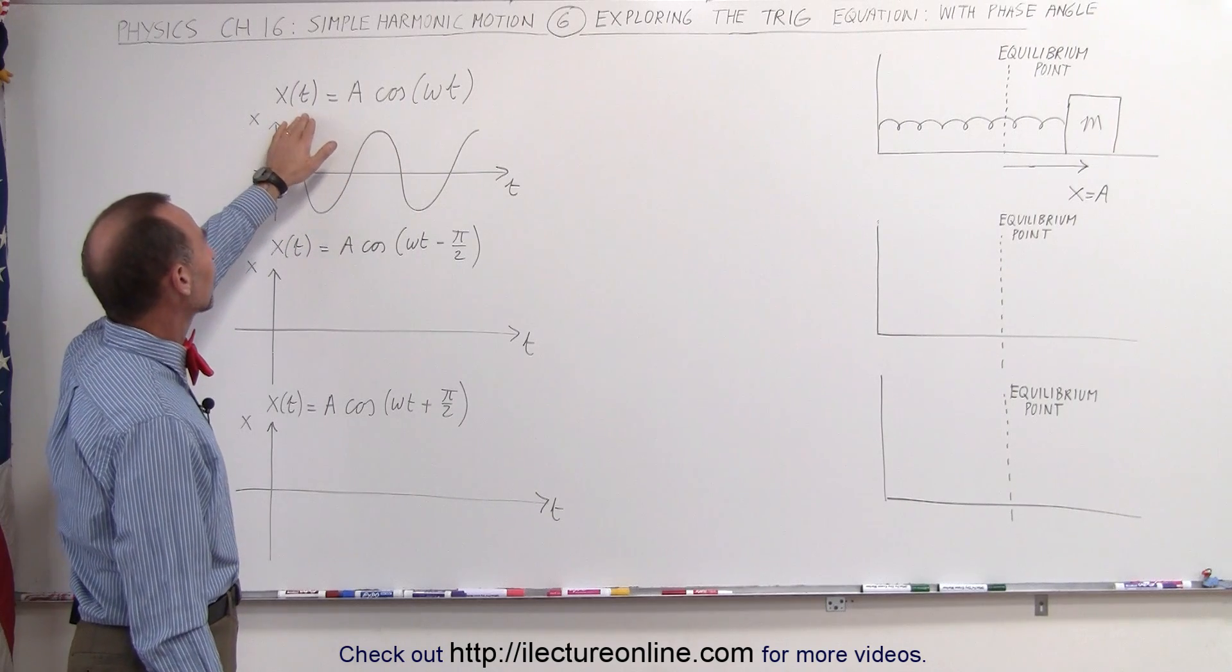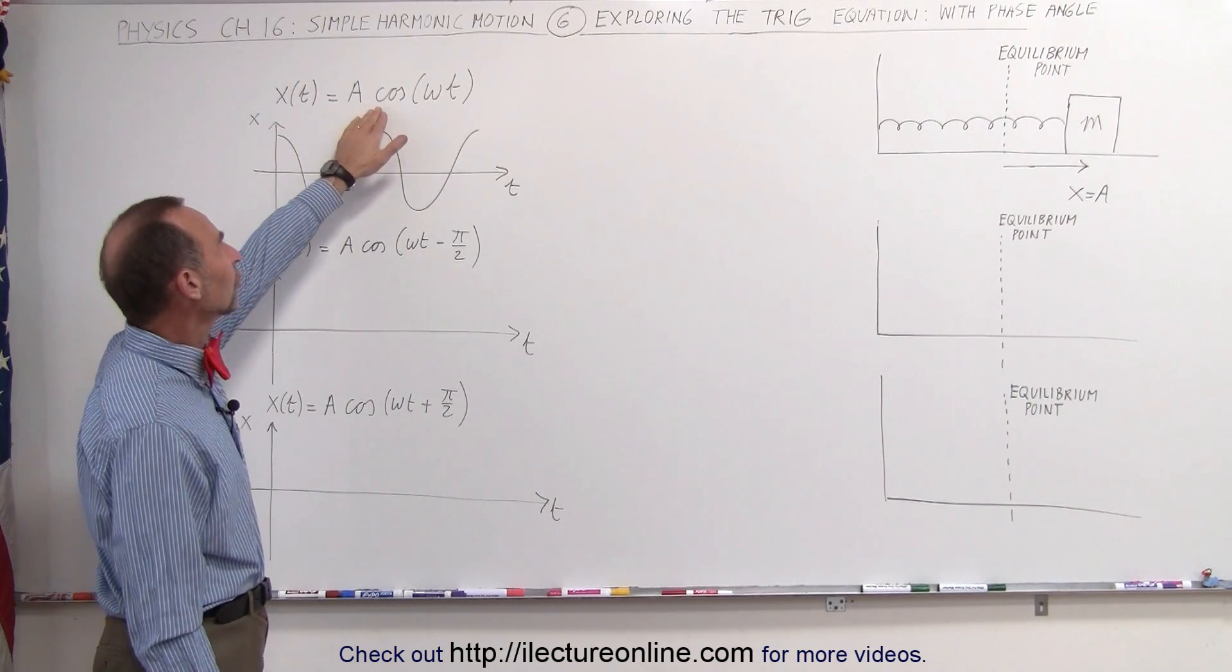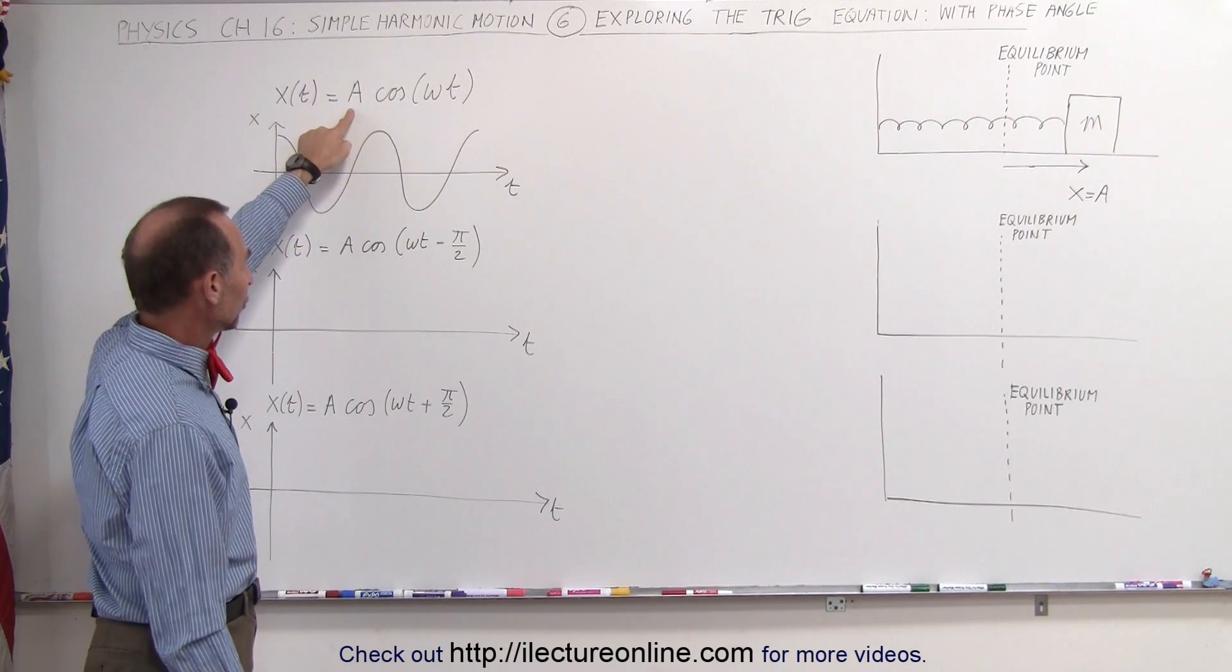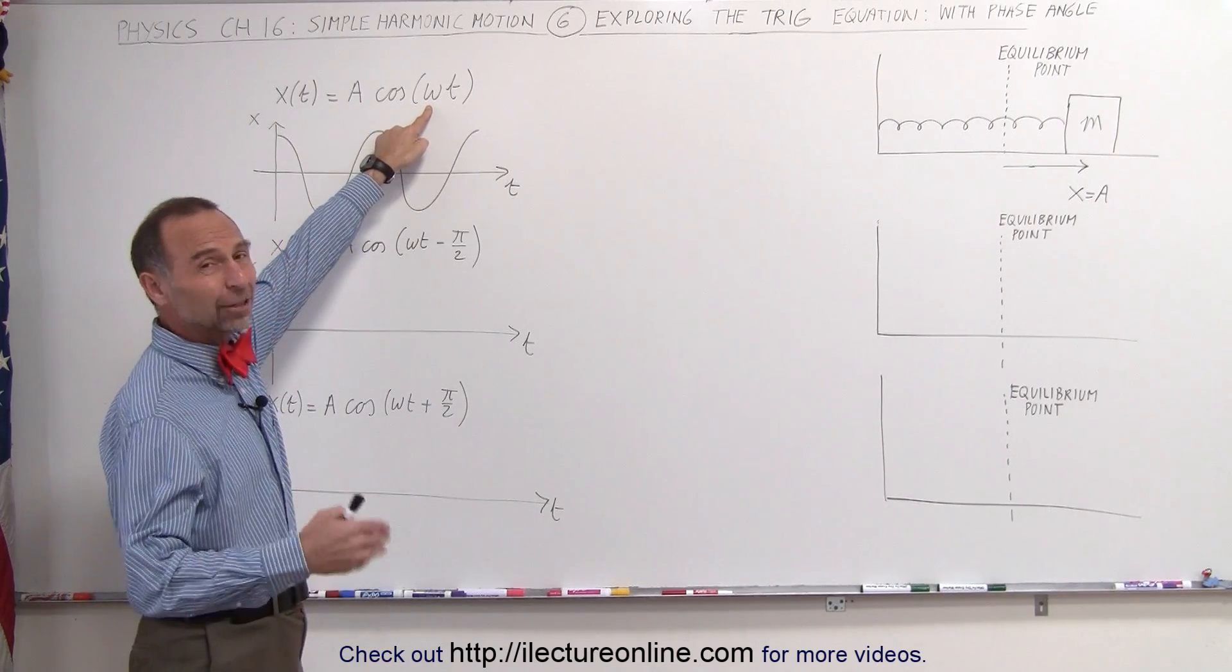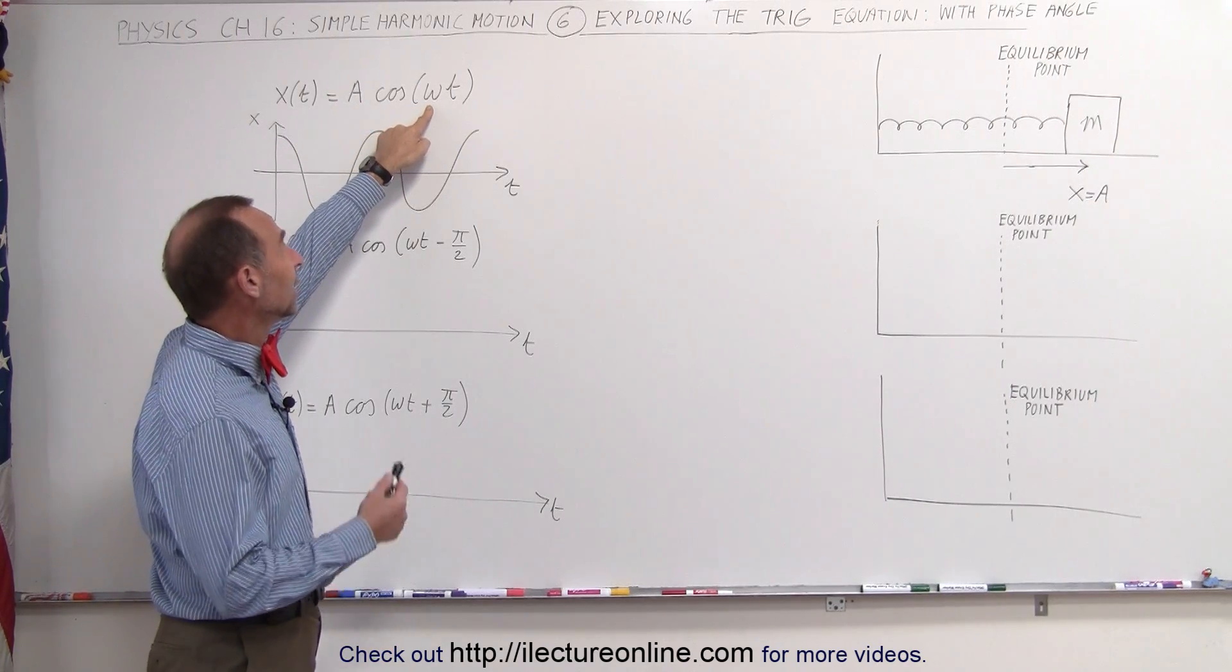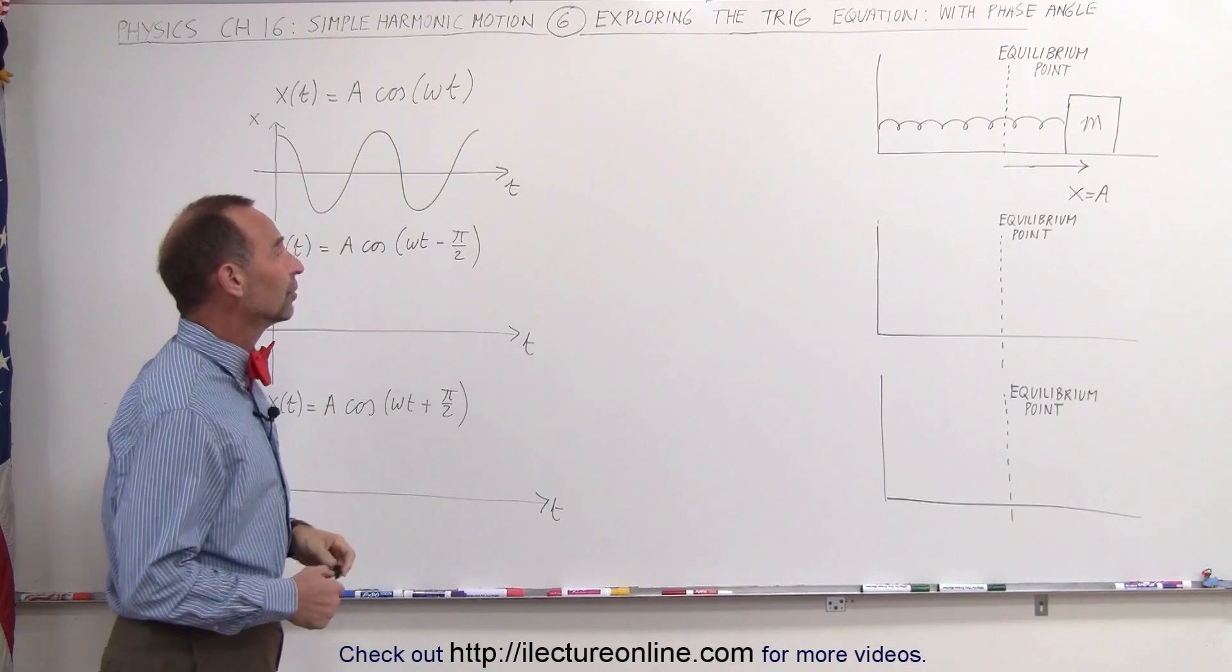Going back to the original equation, x is a function of time equals a times the cosine of omega t. a is the amplitude of the motion, omega is defined as the angular frequency, which is defined by k and m, and then t is equal to the time.